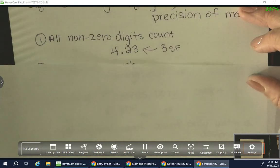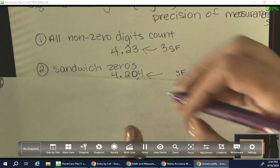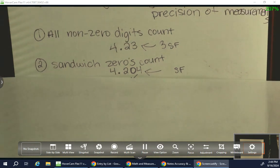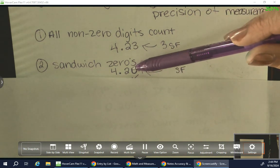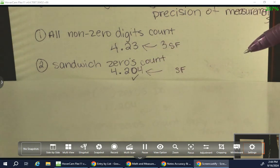Our next rule was sandwich zeros count. Sandwich zeros count. As in, if it's within two non-zero digits, then it matters and it's a significant digit. So we include that in our list. And you'll see why that's important here soon. So looking at this, we have 4.204. That zero is a sandwich zero, which means it does count. So looking at that, how many of those digits are significant? The answer is four.